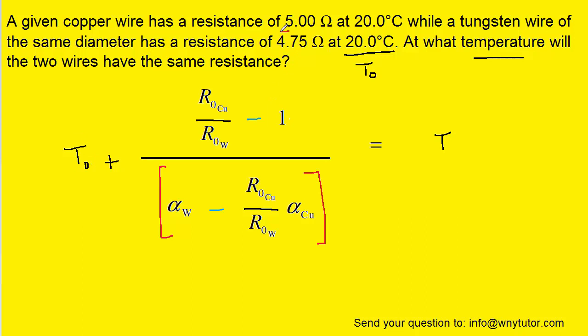The resistance of copper at that temperature was 5 ohms so that's going to go in right here. And the resistance of the tungsten at that temperature was 4.75 ohms so that's going in here. They will also go down in the denominator terms as well.